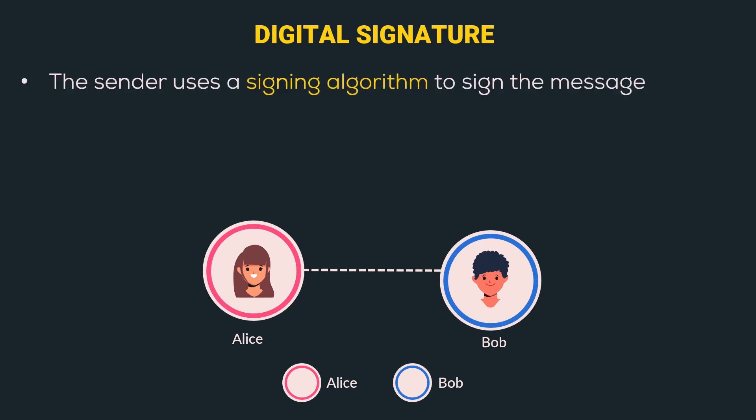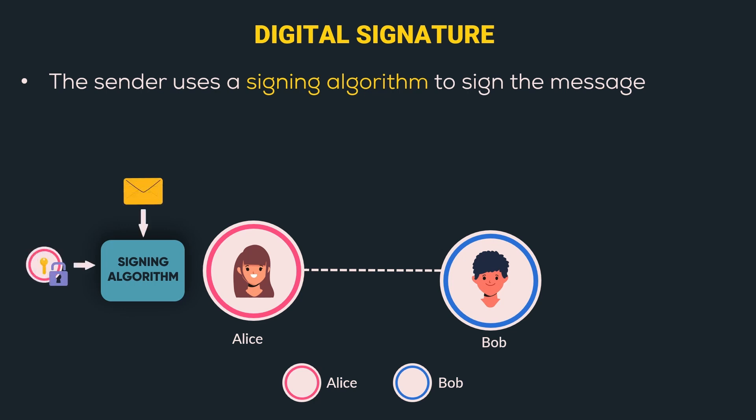In digital signature, the sender uses a signing algorithm to sign the message. Here Alice uses a signing algorithm which takes two inputs: first is the message, and the second is the private key of Alice. The lock symbol is used to indicate a private key. As you can see, it is surrounded by a pink border, indicating that it is Alice's private key.